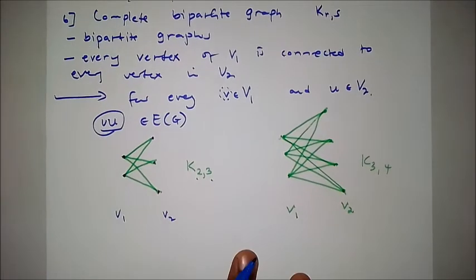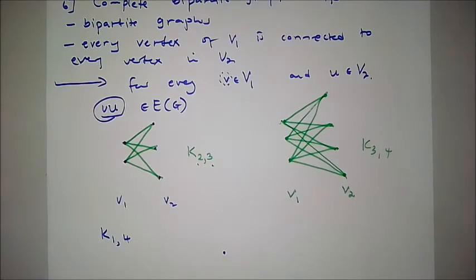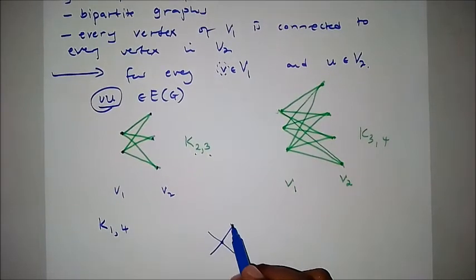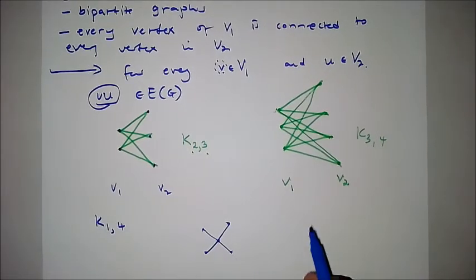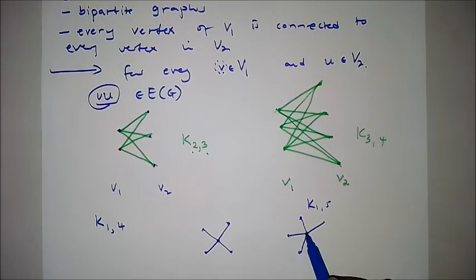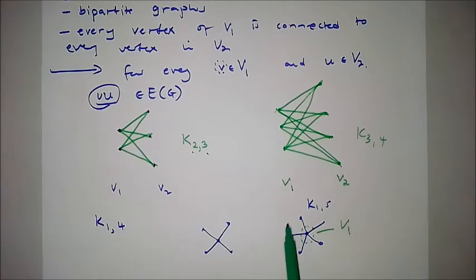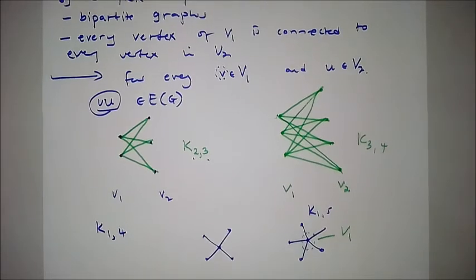Consider K1,4 — one vertex in the first partite set and four vertices in the second. Every vertex in V2 connects to that single vertex in V1. This type of graph is called a star graph. You can also have K1,5, which is similarly a star graph.